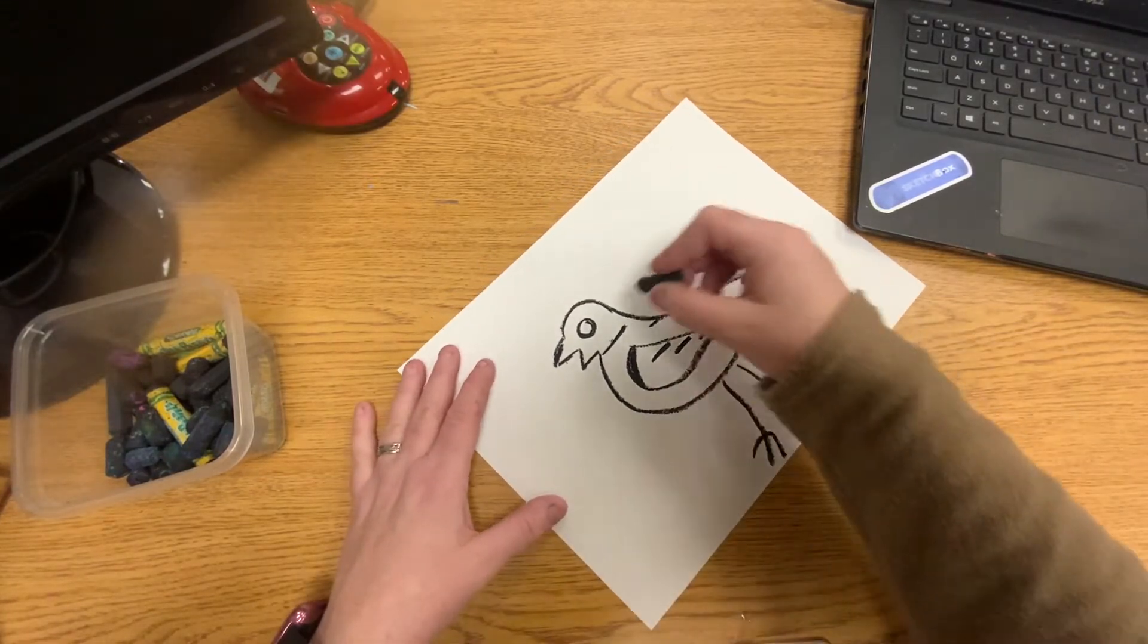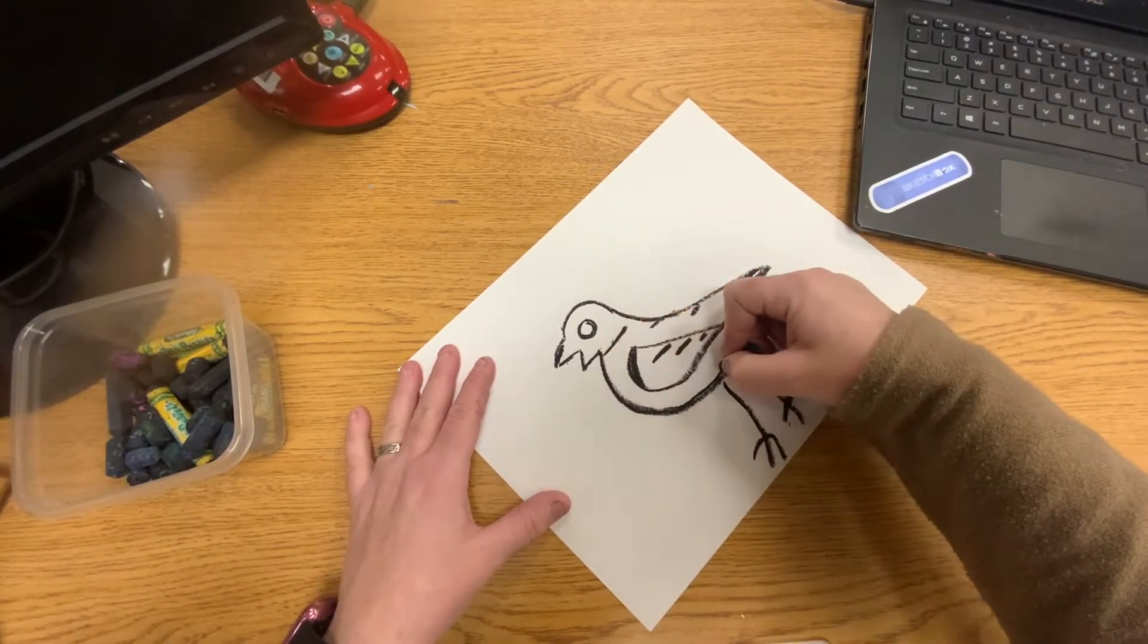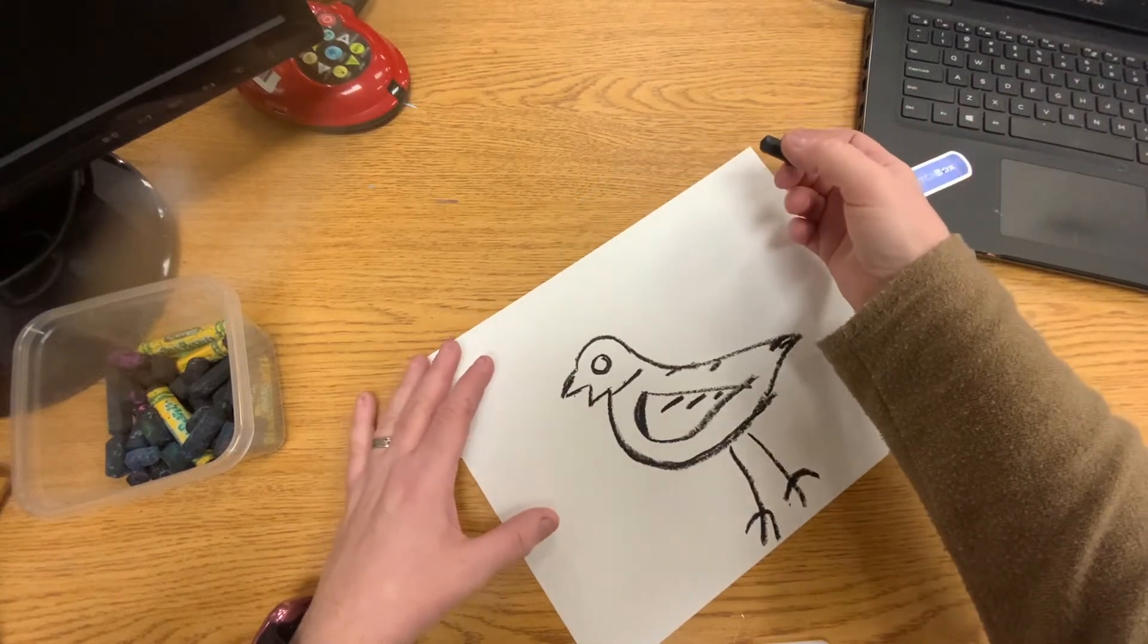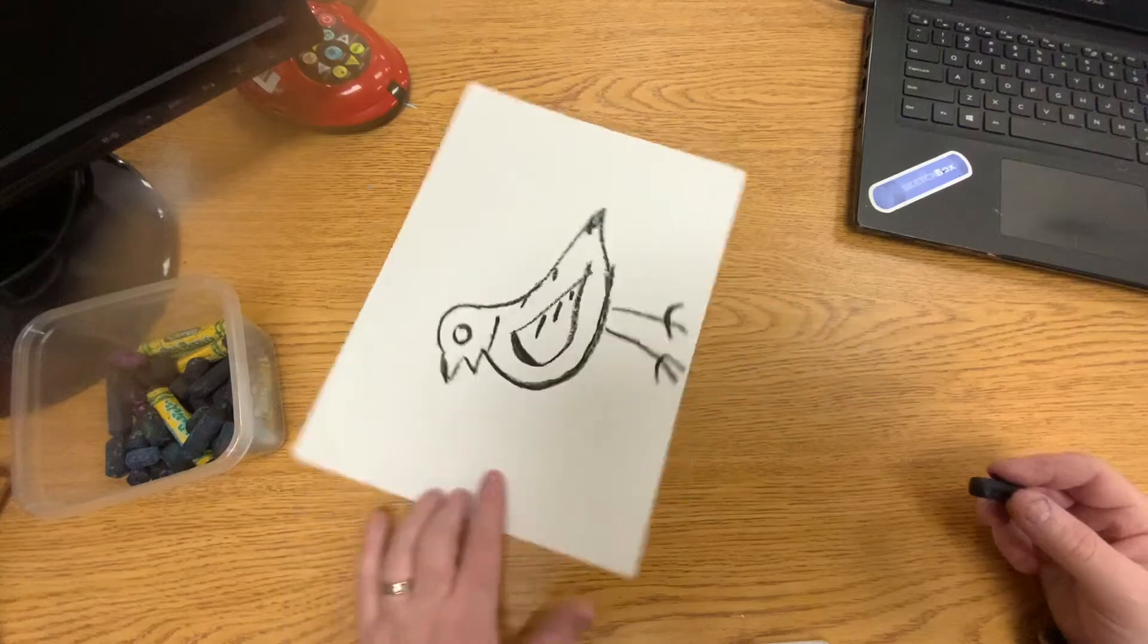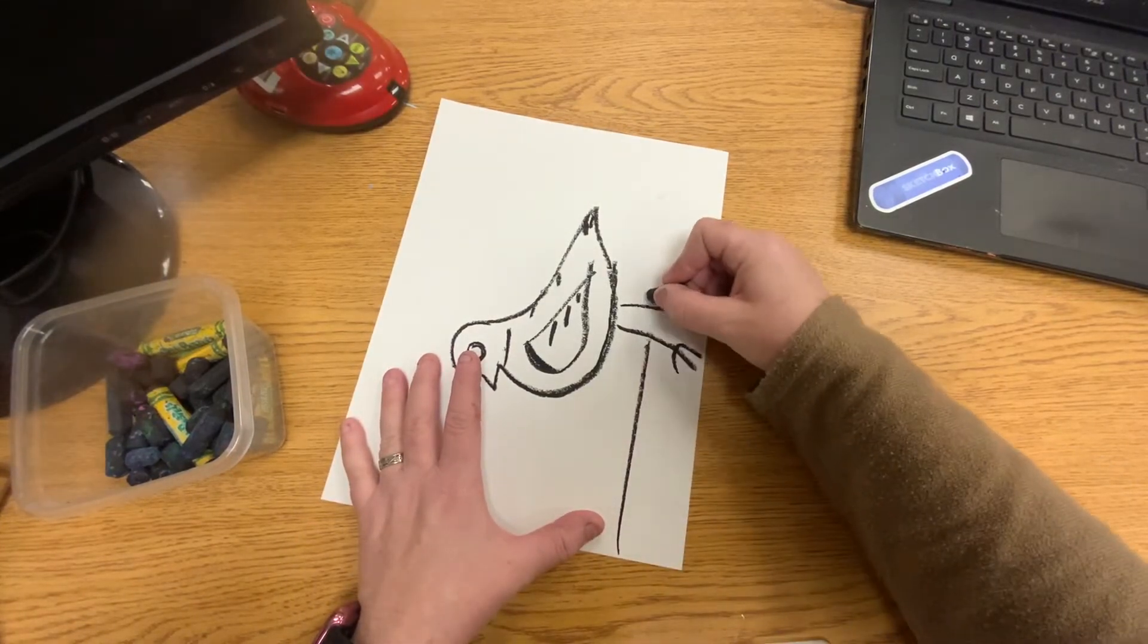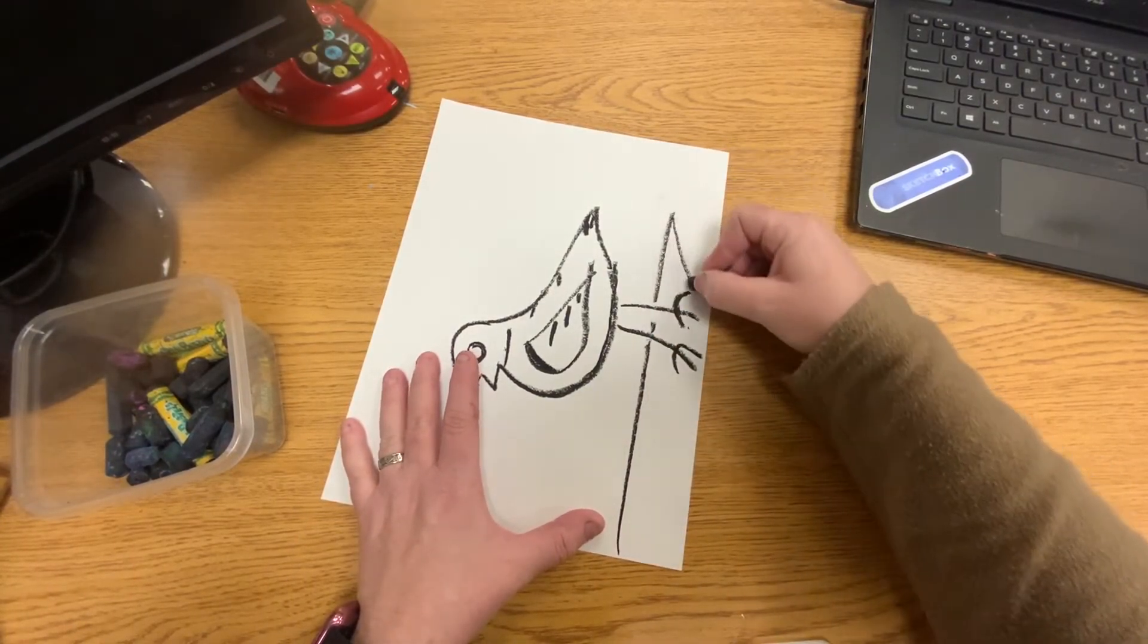And then we're going to work on the background. Basically what you want to do is you want to have sections. A lot of Ashley Bryant's work looks like stained glass, so he has a lot of sections.